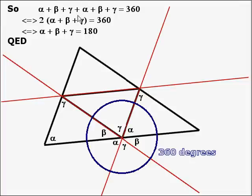So if that's the case, then two times, because alpha plus alpha is 2 alpha, beta plus beta is 2 beta and so on, two times alpha plus beta plus gamma is 360.